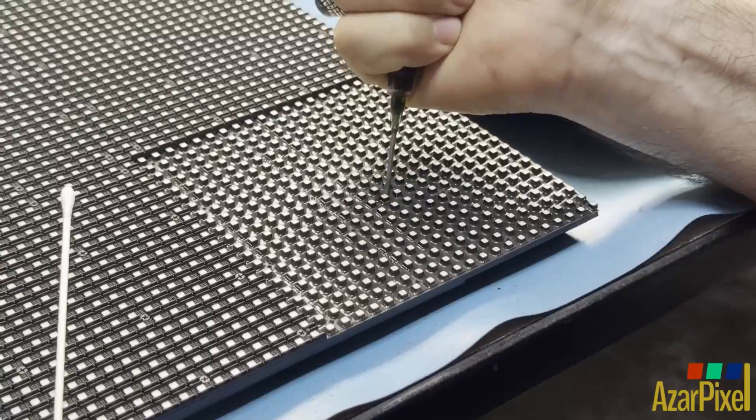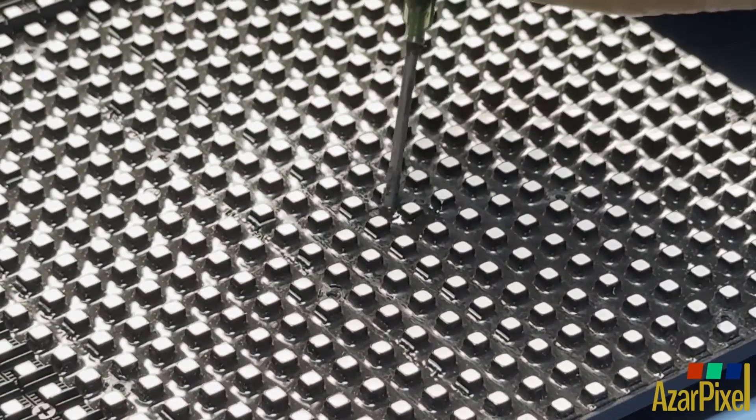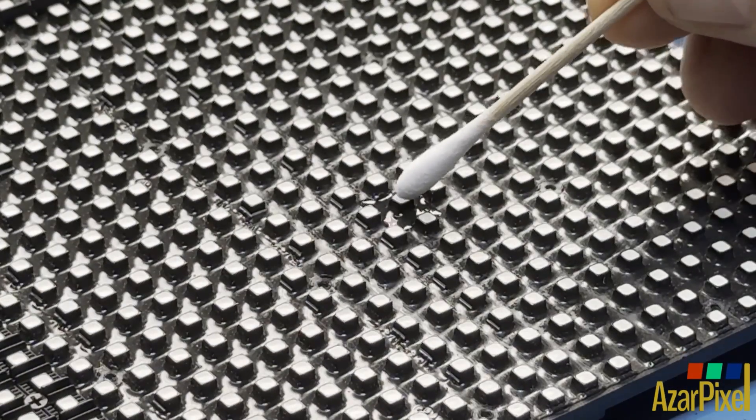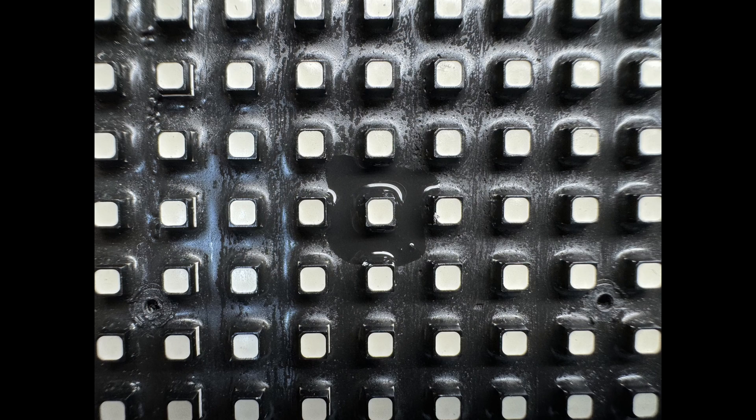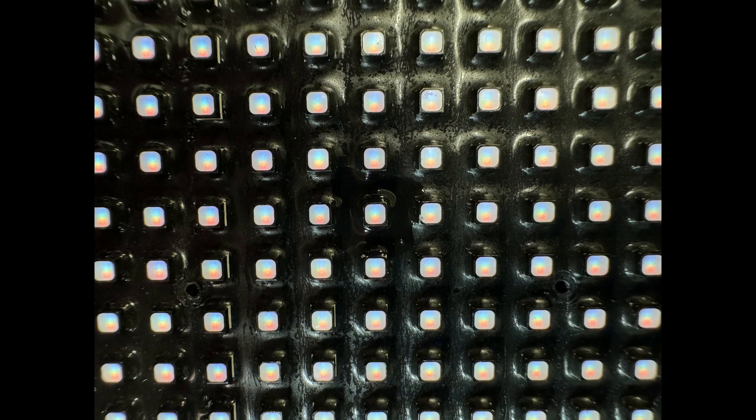The final step involves injecting a conformal coating to seal and weatherproof the LED. This concludes the repair of the Triton Visual Technology 6.8 millimeter outdoor LED module.